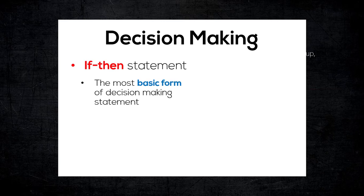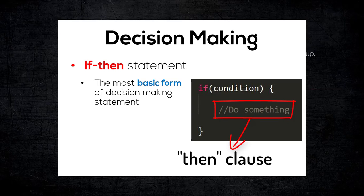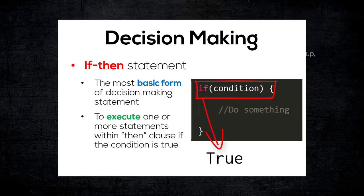The if-then statement is the most basic form of decision-making statement, and it looks something like this — where we have the if keyword, the condition to be tested, and lastly the statements to be executed, also known as the then clause. What it does is basically tell your program to execute one or more statements within the then clause if and only if the condition is true. If the condition is false, however, the statements within the then clause will not be executed and will be ignored.